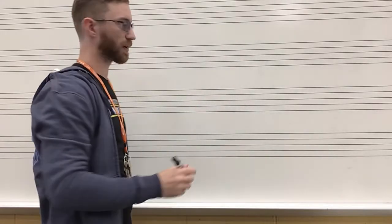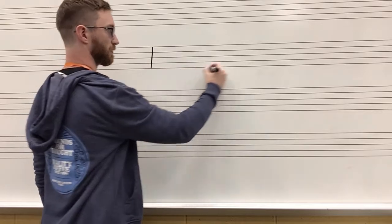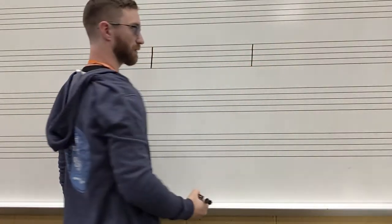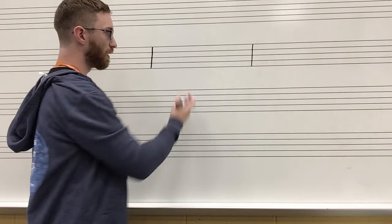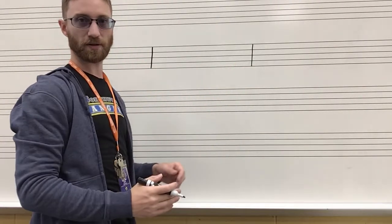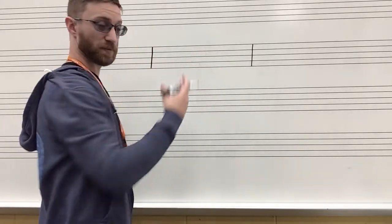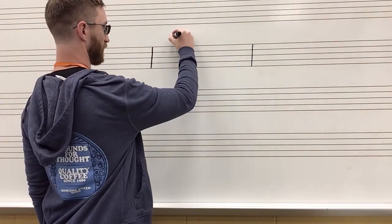So these are called bar lines. Bar lines are going to separate us into what are called measures. So if you turn this it kind of looks like a ruler, and rulers measure things, so this whole thing is called a measure.